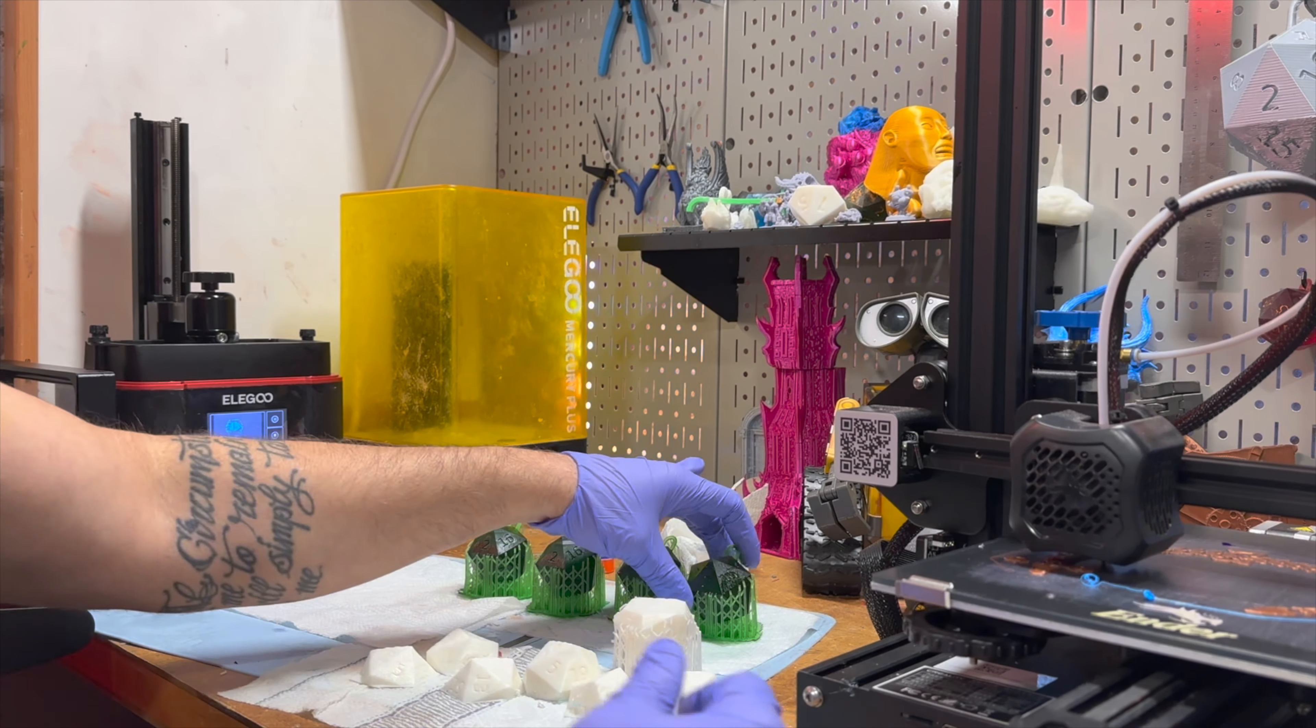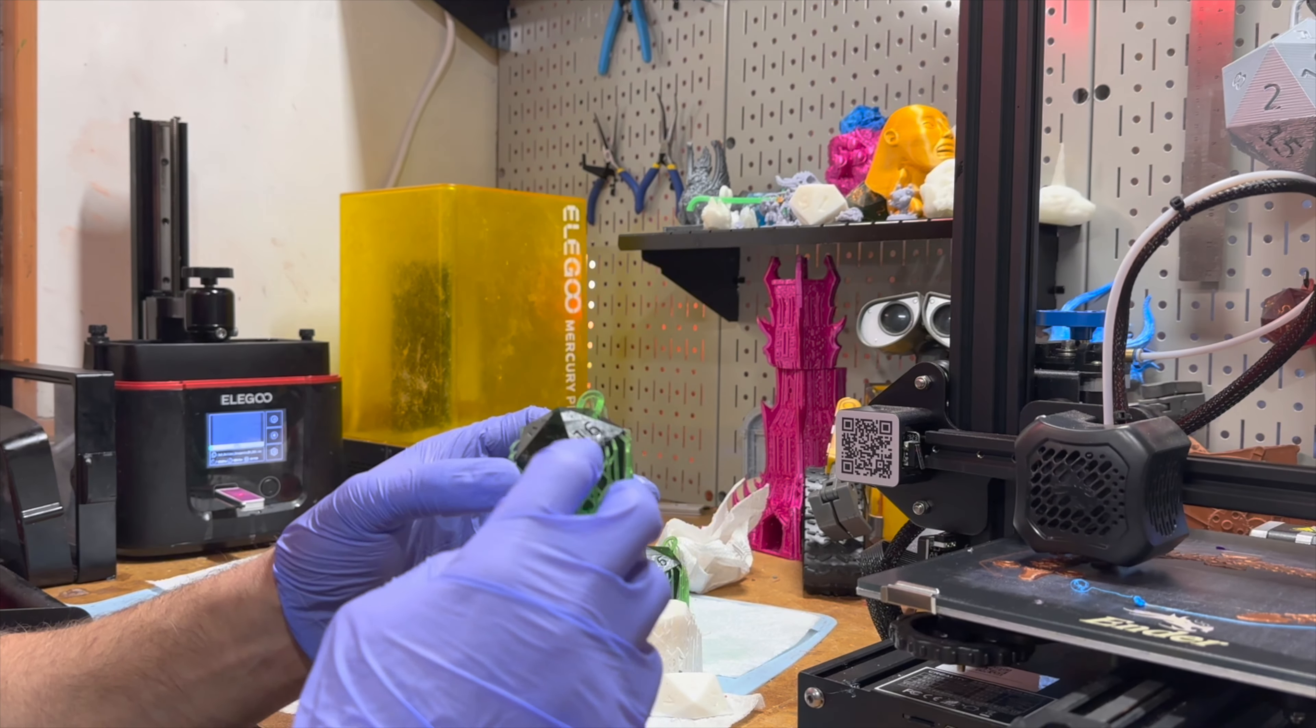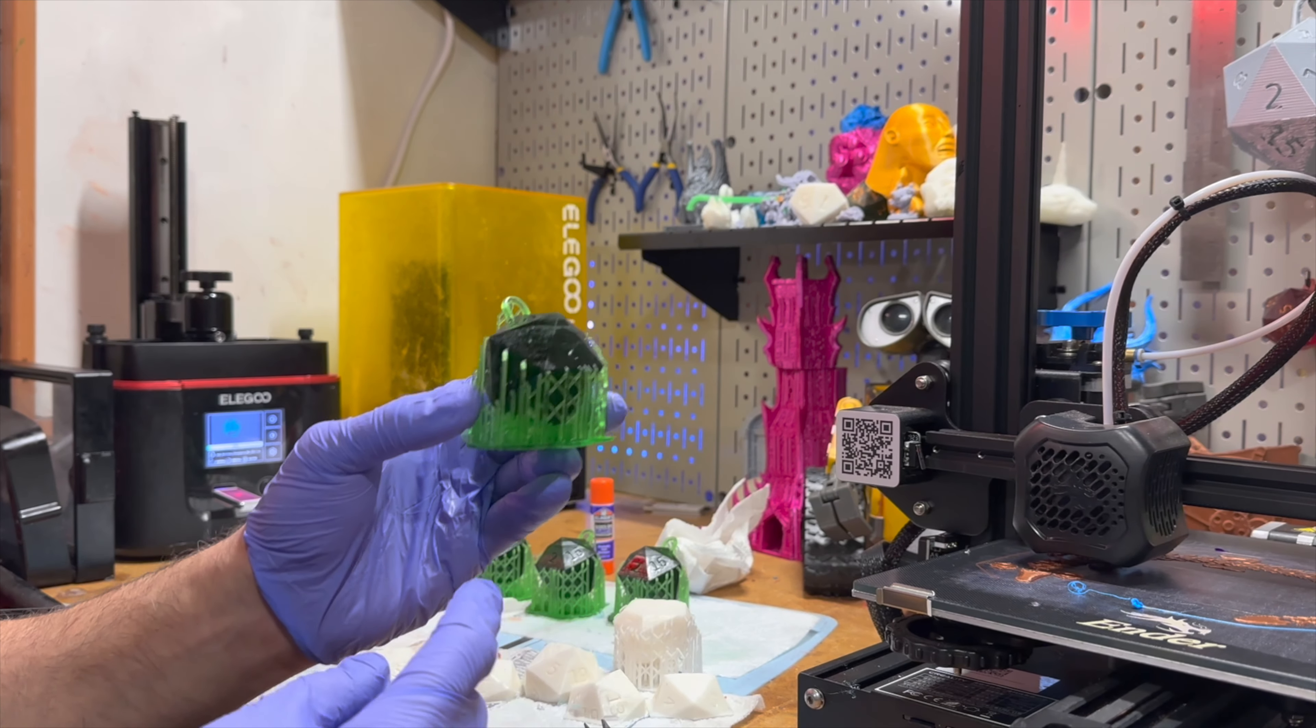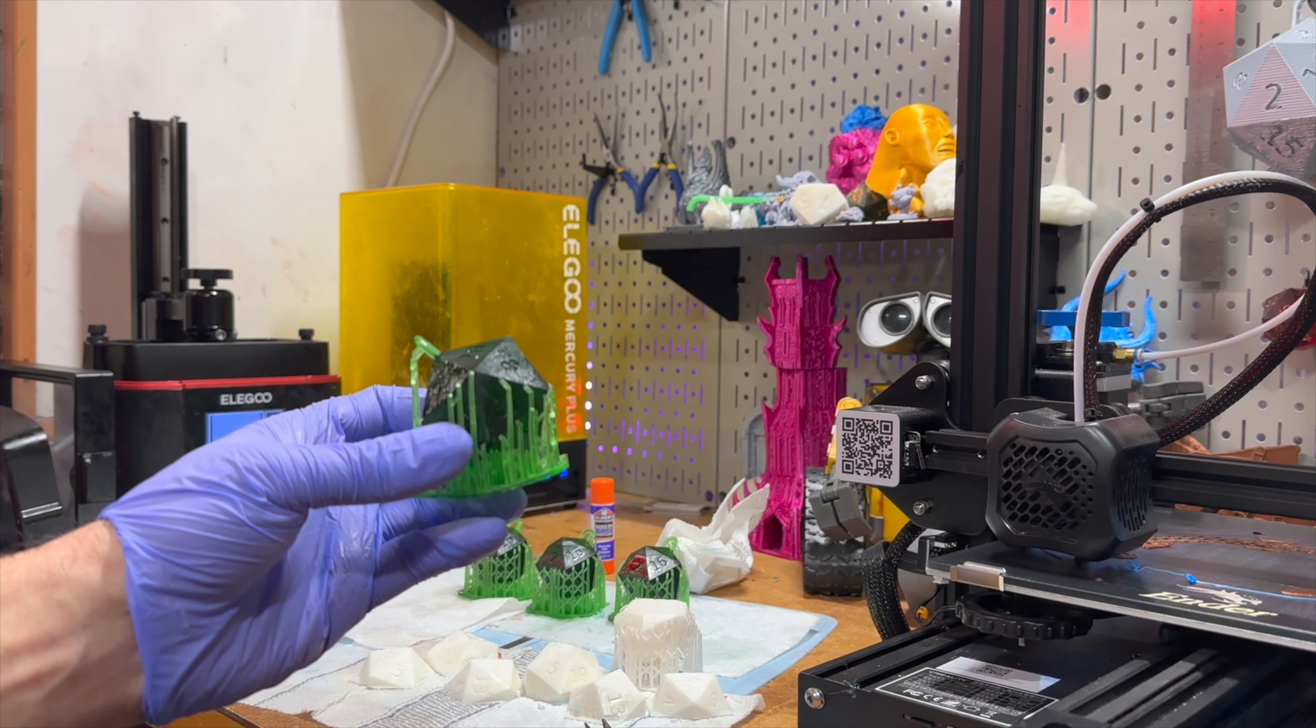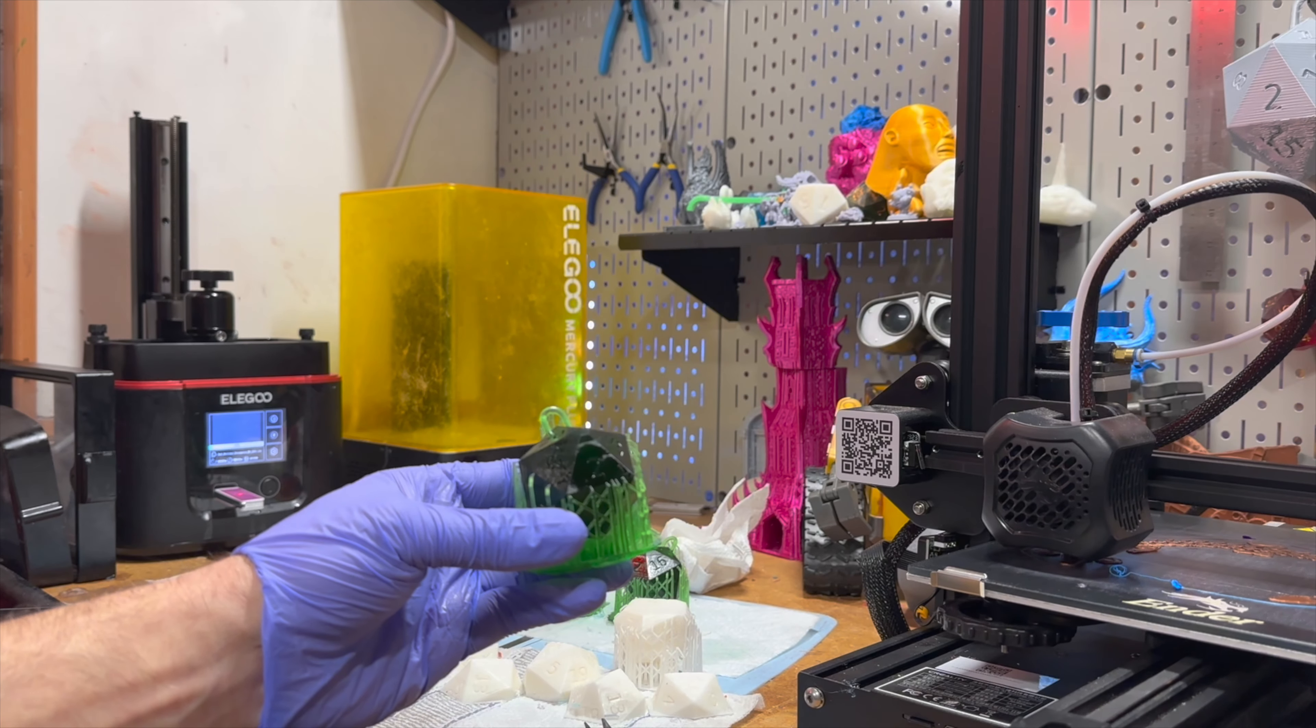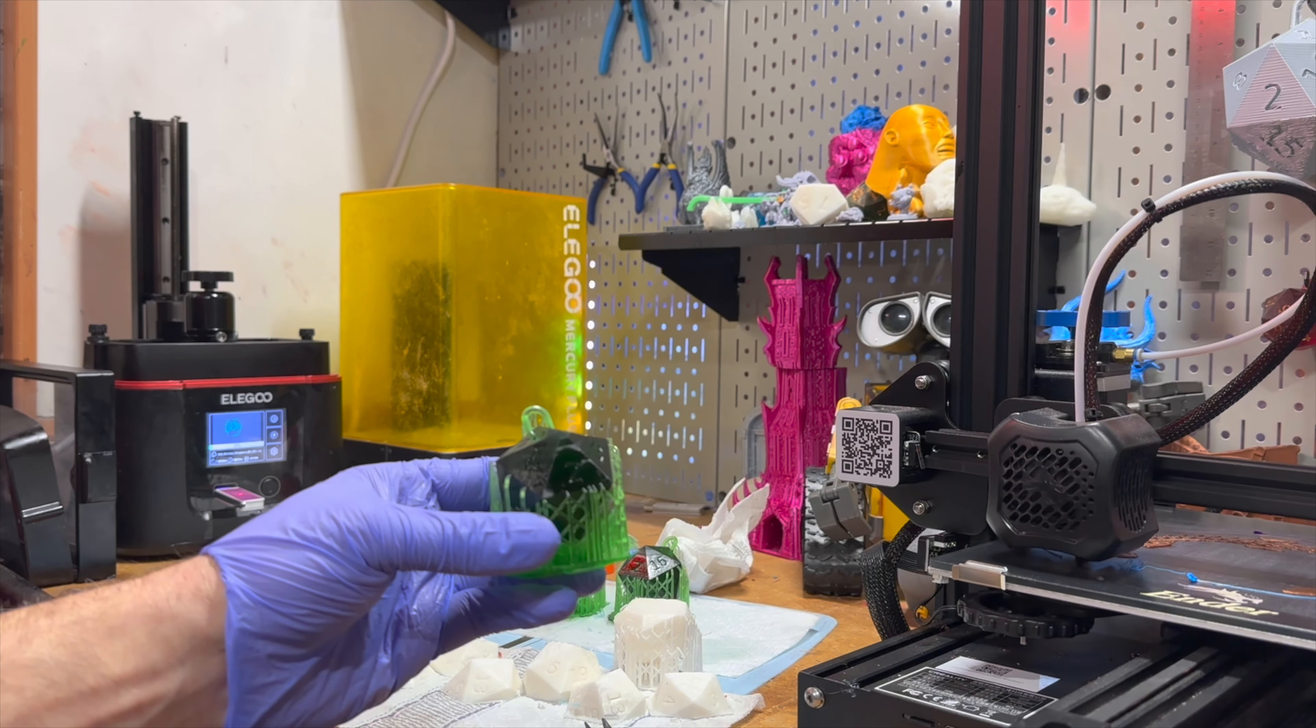Now one of the things to think about with resin curing is the thickness and the size of the model, the weight. The dice itself is actually pretty thick, but the handle is actually pretty thin. So I'll show you how I handle that with different weights. But if you have a smaller model like a mini or something like that, you don't need as much curing time.